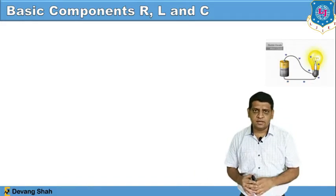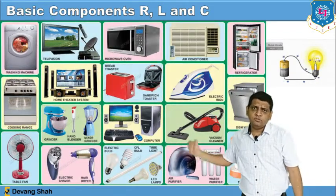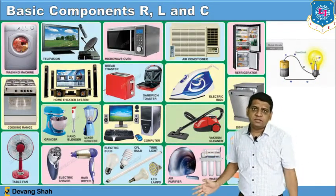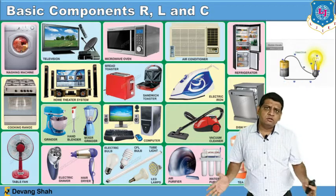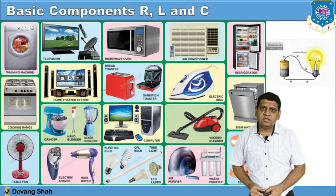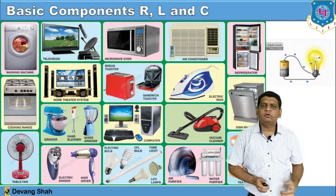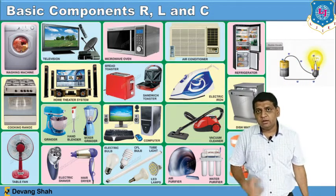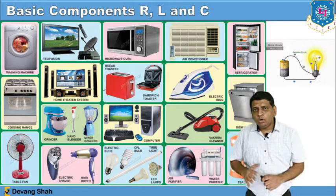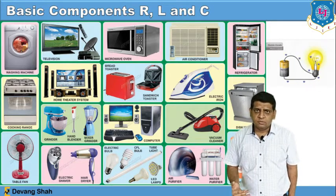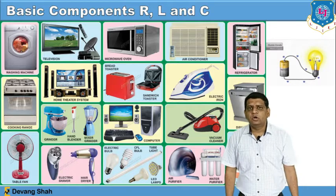To design electrical circuitry we require resistance, inductor, and capacitor. There are various home appliances like microwave oven, television, refrigerator, and washing machine — all these home appliances work because of resistance, inductor, and capacitor. To make these home appliances from scratch, you require electrical circuitry, which is made up of resistance, inductor, and capacitor. That is why these are the primary components.